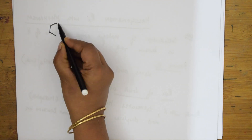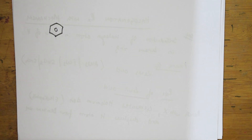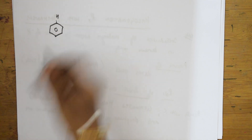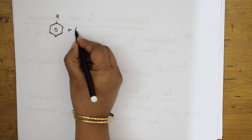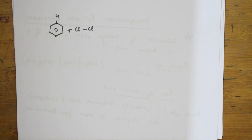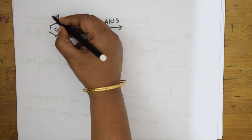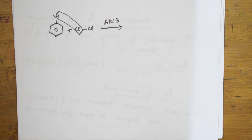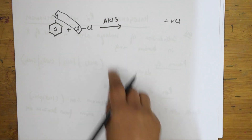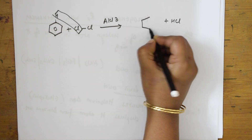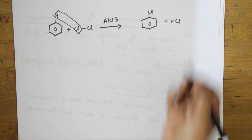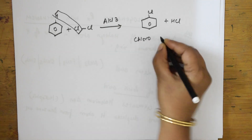Let's start with the halogenation reaction. First I take benzene — C6H6. I add chlorine (X = Cl) in the presence of aluminium chloride as the Lewis acid. The chlorine goes in and replaces a hydrogen atom, and you get chlorobenzene, with HCl leaving.